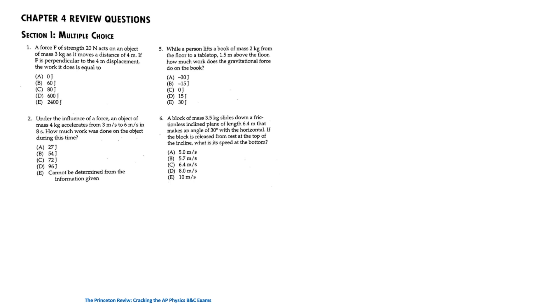Today we're going to solve the review questions for AP Physics on the topic of work and energy. For the first question, a force F of strength 20 Newtons acts on an object of mass 3 kilograms as it moves a distance of 4 meters. If F is perpendicular to the 4-meter displacement, then the work it does is equal to 0, which is answer A.